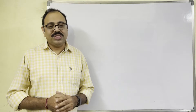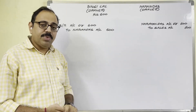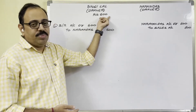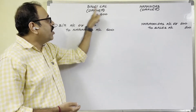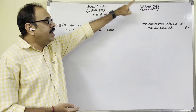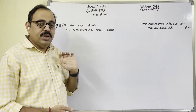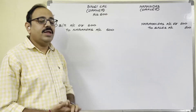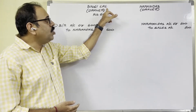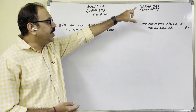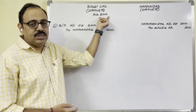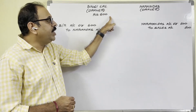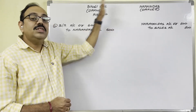Let us start the solution. What was given in the second problem: Bhoge Lal prepared a bill on Narayanthas for 600 rupees. So the drawer is Bhoge Lal and Narayanthas is the drawee. Now the question is why Bhoge Lal prepared a bill on Narayanthas. Our assumption is he sold goods to Narayanthas on credit for 600 rupees, so as a written proof he prepared a bill on Narayanthas and received acceptance.